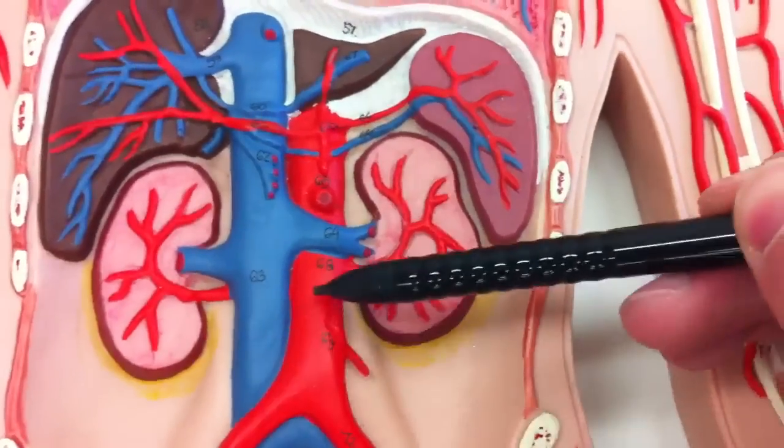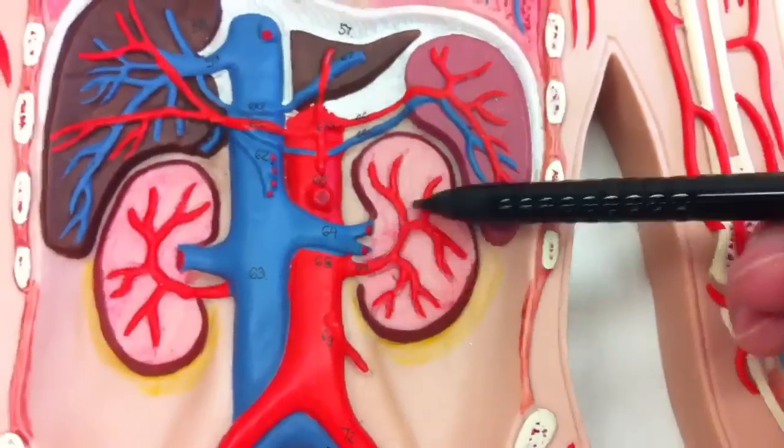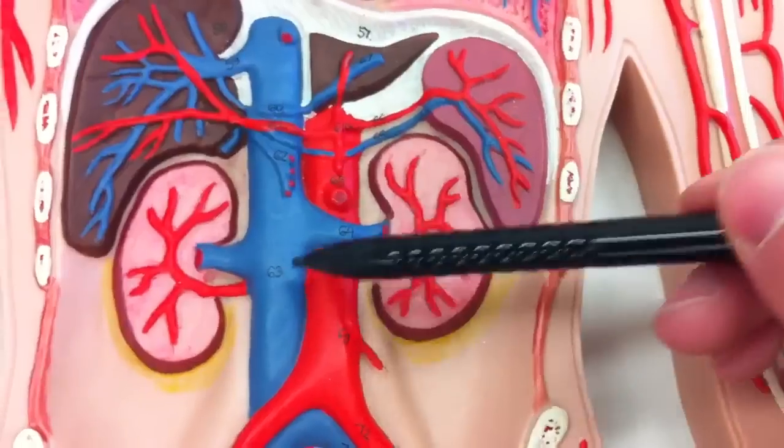Between them you'll have, they're not shown, but the gonadal arteries too. And then you have the renal arteries here that serve the kidneys.